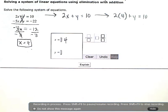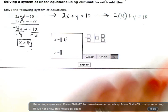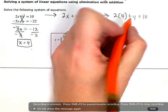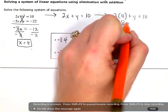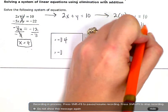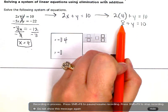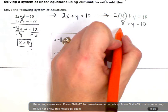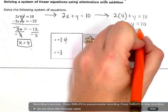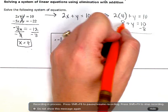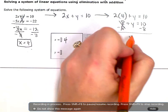So now I'm just going to simplify and solve for this y. So 2 times 4 is 8. 8 plus y equals 10. And then to get the y by itself, I need to subtract off this 8 here, or zero out that 8. And I get y equals 2.